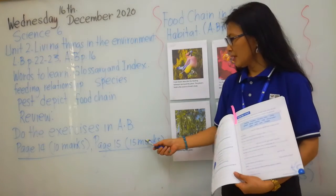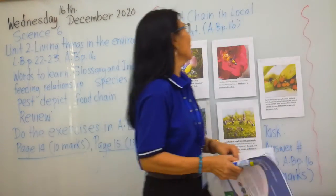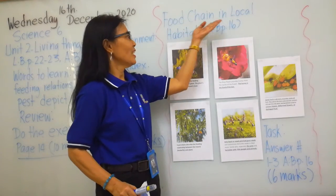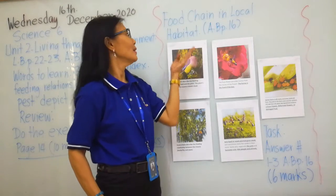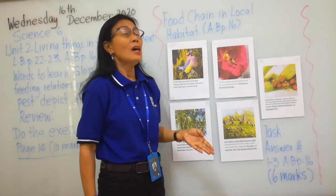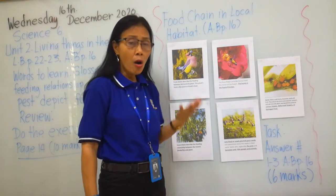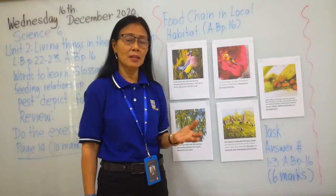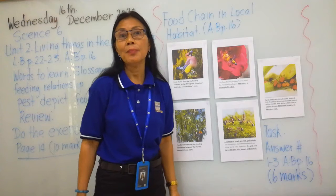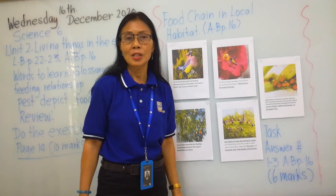You will have 15 marks for that. Now let us know your lesson proper which is about food chain and local habitat. Food chain and local habitat. When you speak of habitat, it's a home — it's the environment, the place where the animals and plants live in order to survive.